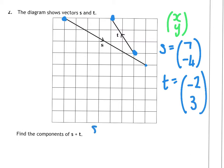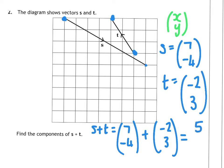So S plus T would be 7, minus 4 plus minus 2, 3. 7 take away 2 is 5, minus 4 plus 3 is minus 1. So that is what S plus T is.